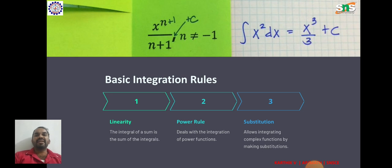Constant Rule: Integral k dx equal to kx plus c, where k is a constant. The integral of a constant is the constant multiplied by the variable of integration.